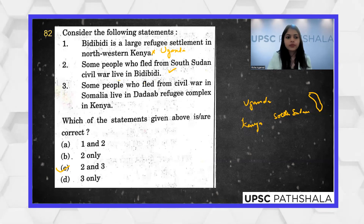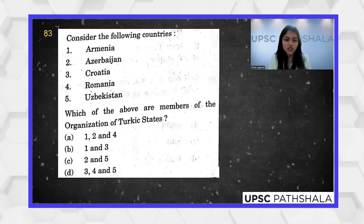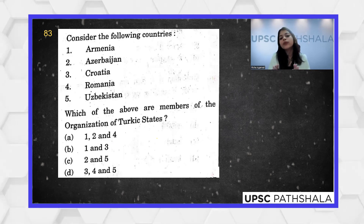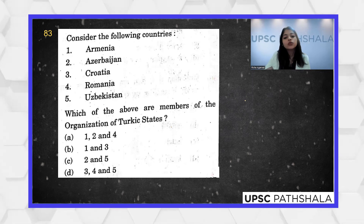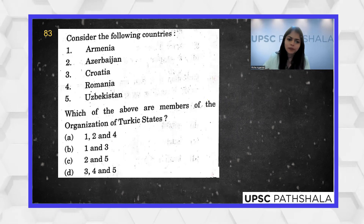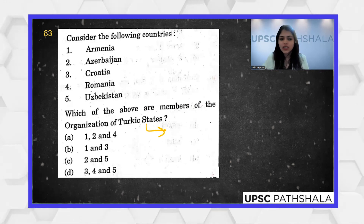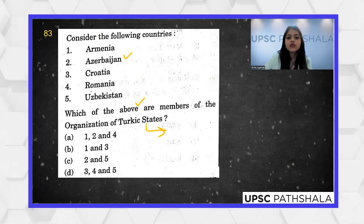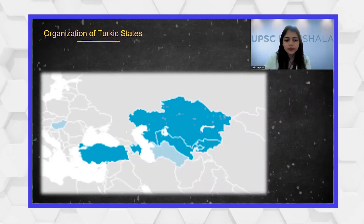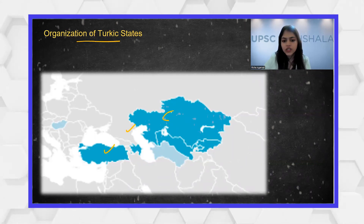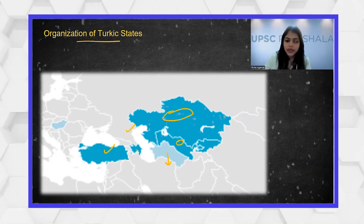Member states of the Organization of Turkic States — this organization was in the news because Turkmenistan was trying to gain membership and was given observer status. The Turkic Council has been renamed the Organization of Turkic States. The current member states representing Turkic ethnicity and language are Turkey, Kazakhstan, Uzbekistan, Azerbaijan, and Kyrgyzstan. Turkmenistan has observer status only. Azerbaijan and Uzbekistan — options two and five — are among the correct member states.